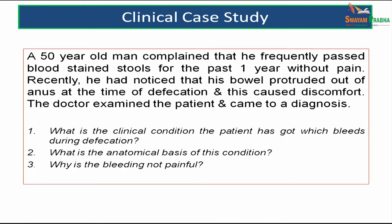Let us begin this lecture with a clinical case study. A 50-year-old man complained that he frequently passed blood-stained stools for the past one year without pain. Recently, he had noticed that his bowel protruded out of the anus at the time of defecation and this caused discomfort. The doctor examined the patient and came to a diagnosis. The questions for this clinical case study are: What is the clinical condition the patient has which bleeds during defecation? What is the anatomical basis of this condition? Why is the bleeding not painful?